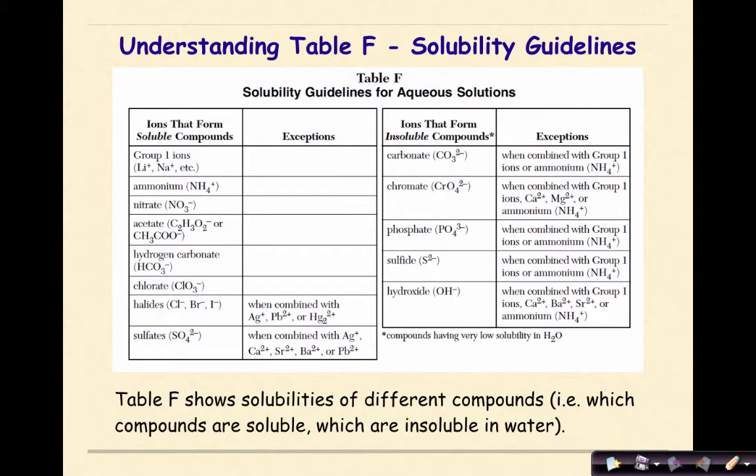Let's start off by talking about table F. Table F is the solubility guidelines for aqueous solutions, which means our solvent here is going to be water. Table F shows solubilities of different compounds—in other words, which compounds are soluble and will dissolve in water, or which are insoluble and will not dissolve in water. They will stay as a solid, or another term, precipitate.